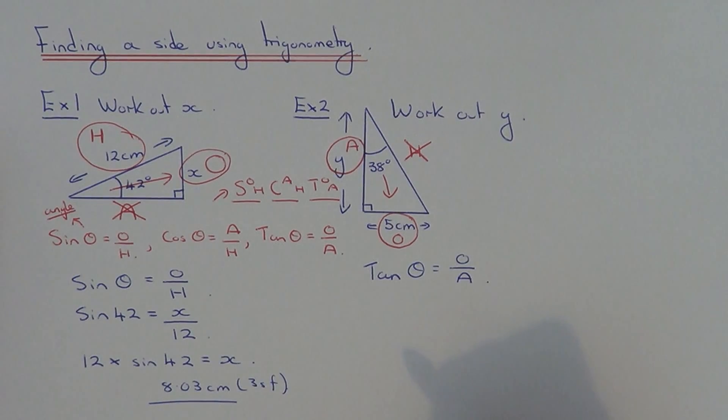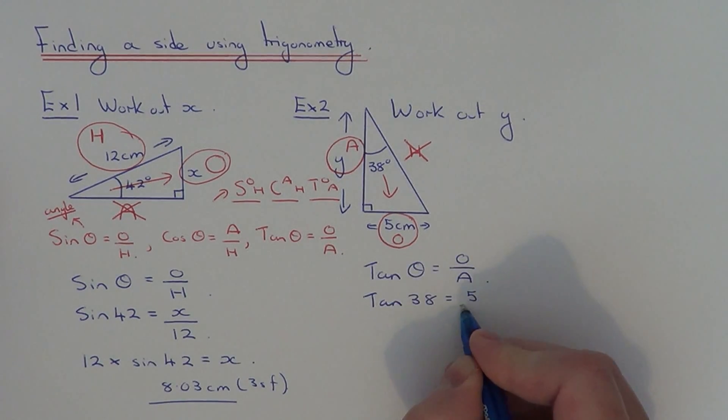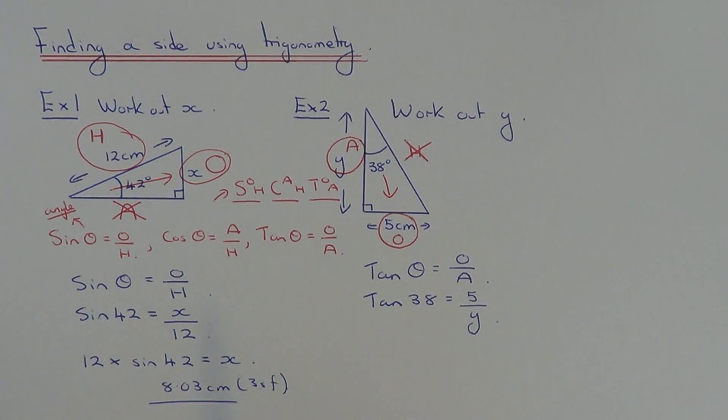If we substitute our numbers into our formula: tan, the angle is 38, the opposite is 5, and the adjacent side is y. Now, I did say this one's a little bit different to the first example. If you notice, the unknown side, the side we're after, is on the denominator of the fraction.